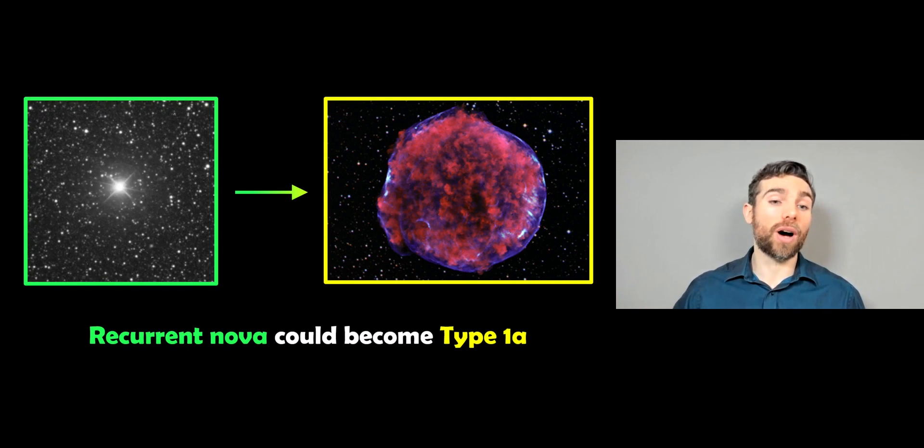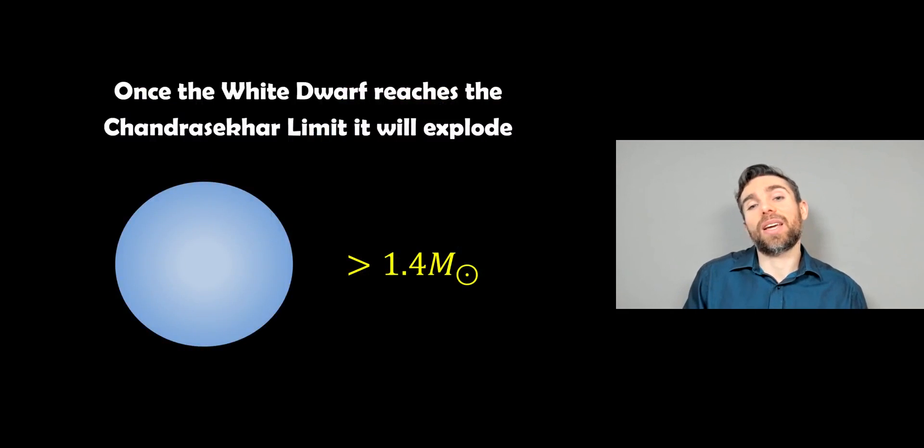So a recurrent nova likely would lead to a type 1a. So you would get those novas occurring beforehand, before it reached that critical level. And that critical level is known as the Chandrasekhar limit. And it's generally around about 1.4 solar masses. And that's when you have that type 1a occur, because it gets to the temperature when the whole star basically ignites.